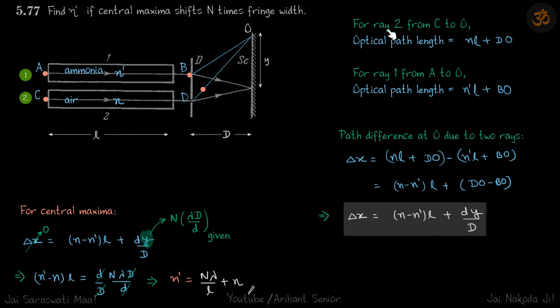So let's write for ray two from C to O. So this is the ray two from this point C to this point O, path length is nL plus DO. So nL due to the medium and DO due to the geometry. We are just taking a random point at a distance Y from the center, from the axis. Now, similarly for ray one, the optical path length is nL due to medium plus this length BO.